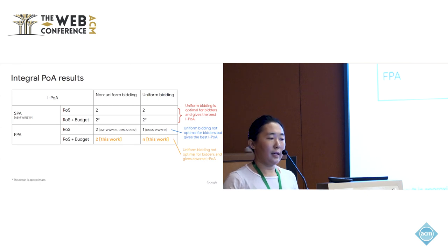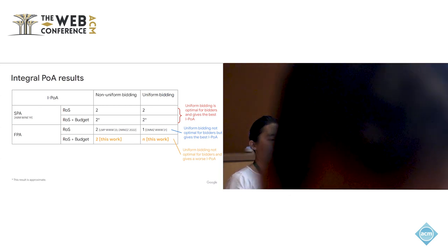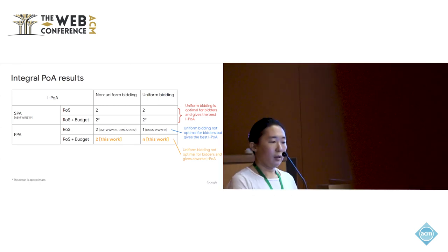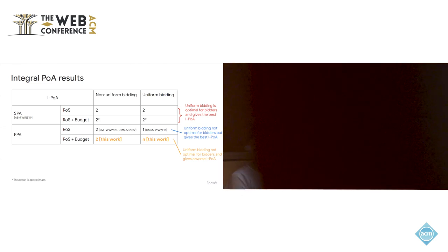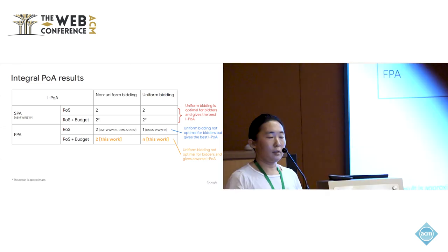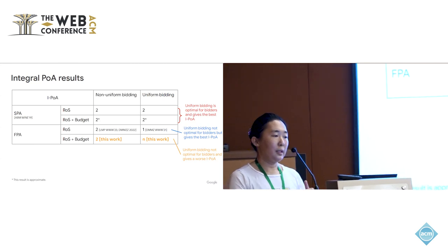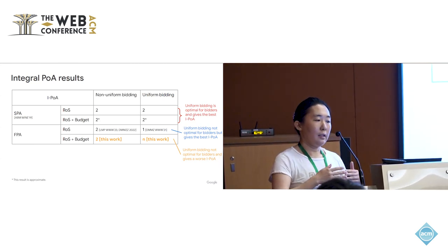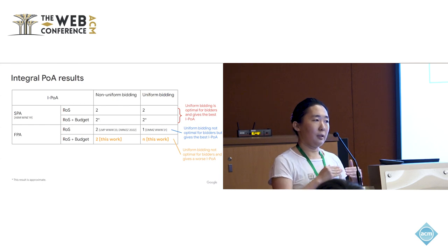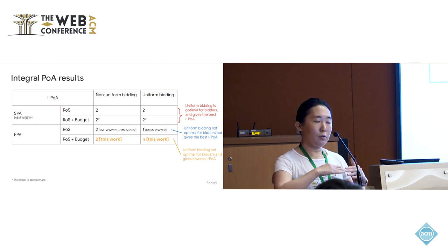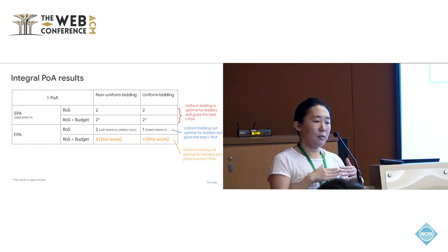In this work, we first generalize the non-uniform bidding IPOA result of two to the setting with both RS and budget constraints, showing it still holds. For uniform bidding, however, things become much worse: the IPOA can be n. Intuitively, a bidder with a budget constraint gets none of the queries, but since they must raise bids uniformly across all queries, they would break their budget — so they are stuck either getting nothing or breaking their budget.